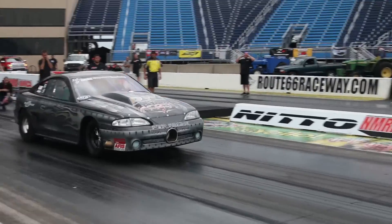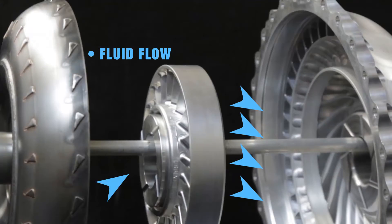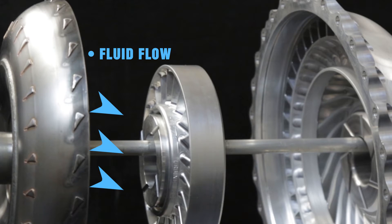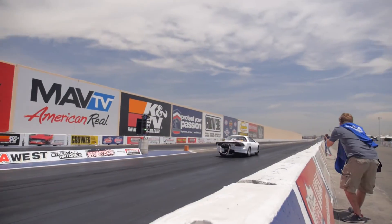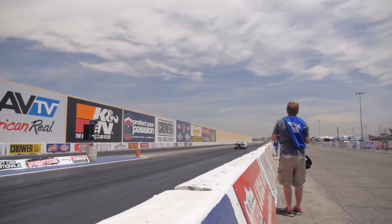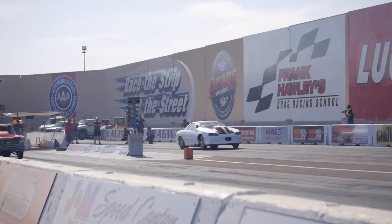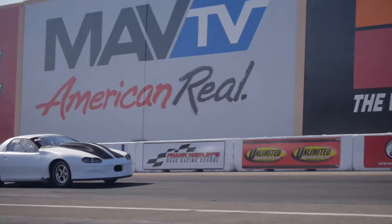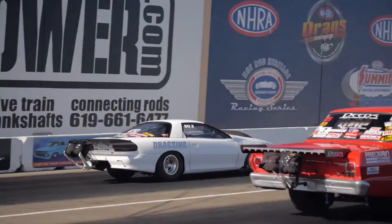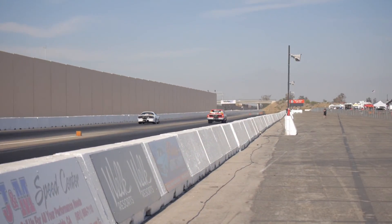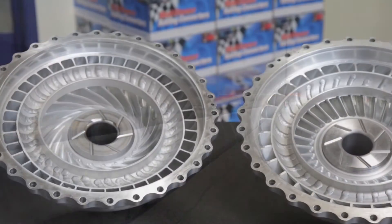When the vehicle starts to speed up and the RPM of the turbine begins to approach that of the impeller, the flow through the stator changes and begins to strike the back of the stator blades, causing it to freewheel thanks to the diode. This keeps the stator from impeding flow, increasing the efficiency of the torque converter on the top end.